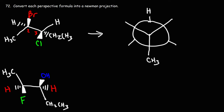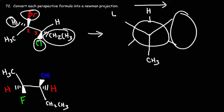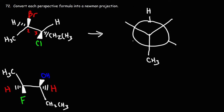Focusing on carbon 2, we have bromine in the upper right side and hydrogen in the upper left side. Here's bromine in the upper right side because it's on the wedge — it's coming out of the page. And here's hydrogen in the upper left side; it's on the dash, going into the page. Now moving on to carbon 3.